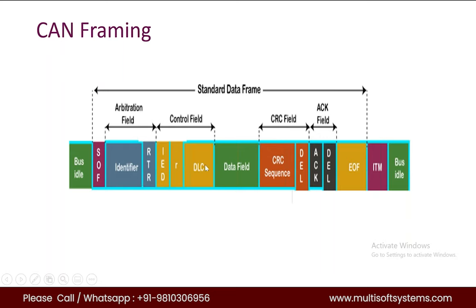After that we have DLC — Data Length Code — which defines how much data is present. It is 4 bits. Then we have the data field, which can contain up to 8 bytes since CAN supports only 8 bytes of data. After that we have the CRC field — Cyclic Redundancy Check — which is 15 bits and is used to detect corruption during transmission.